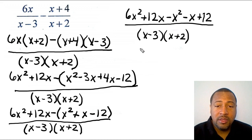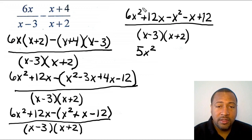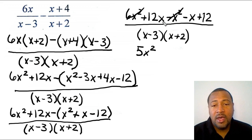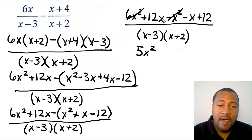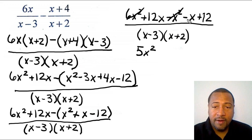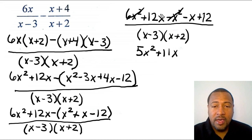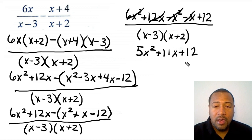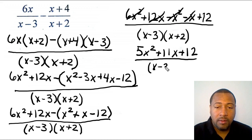Next I look for x terms: I have 12x and negative x, with an imaginary coefficient of 1 on the second. Positive 12 minus 1 gives me positive 11x. The only constant left is positive 12. So the numerator simplifies to 5x² + 11x + 12, over (x − 3)(x + 2).